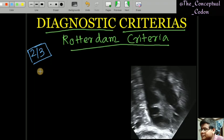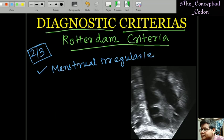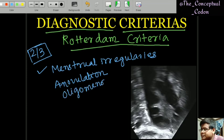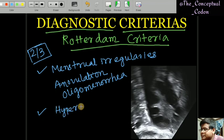The first feature is menstrual irregularities, which can be in the form of anovulation or oligomenorrhea. The second criteria is hyperandrogenism — there is increased androgen, which leads to hirsutism.